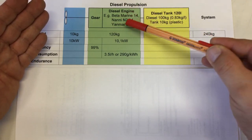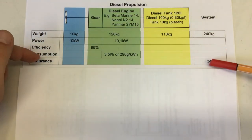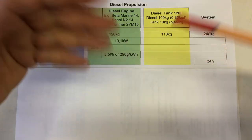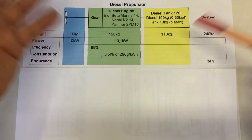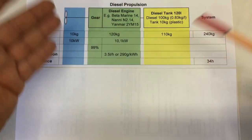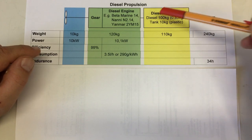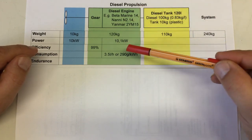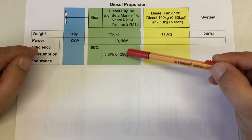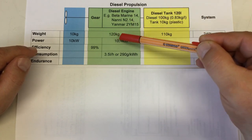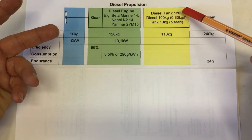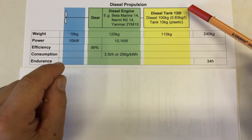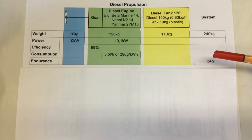The endurance is equally trivial. We divide our 100 kilograms by 290 grams per kilowatt hour times 10.1 kilowatts, or we divide our 120 liters by 3.5 liters per hour, and that gives us about 34 hours endurance.